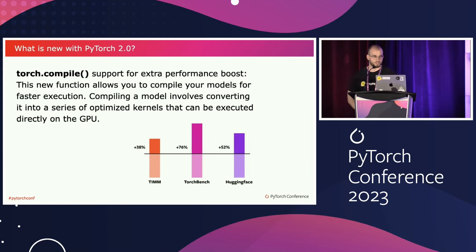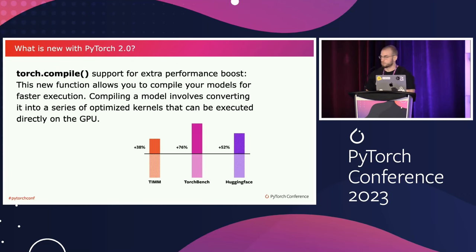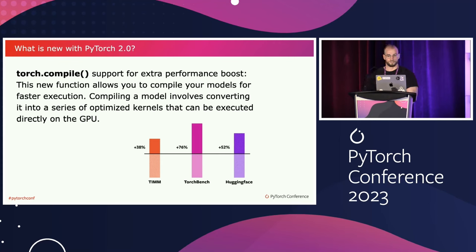Then there's Torch Compile, which is an extra performance boost. With Torch Compile, we are now able to compile our models for faster training and also faster inference. Those numbers were from PyTorch 2.0, but with PyTorch 2.1 we went up 50% as well. A 50% or 30% performance improvement just by using Torch Compile is super impressive, especially in a production environment where cost or time matters.